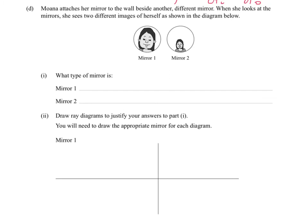Moving on. D. Moana attaches her mirror to the wall beside another different mirror. And when she looks at the mirrors, she sees two different images of herself as shown in the diagram below. So what type of mirror is mirror 1? And what type of mirror is mirror 2? Well, if you were looking at these without knowing the prior version, like the concave mirror that we were dealing with, you couldn't totally tell for sure. But you would tend to suspect, I'm talking in terms of whether there's a plain mirror in there or not. But we know they're both curved mirrors. Actually, you know what? Maybe we don't. But we would assume they're both curved mirrors, just to be a little bit tricky. And one's going to be concave and one's going to be convex. Type 1 mirror, because it's enlarged, definitely can't be a convex mirror like this one. So we'll call that the concave.